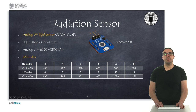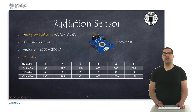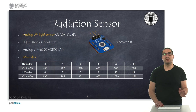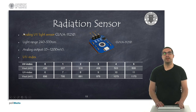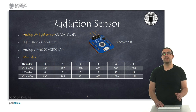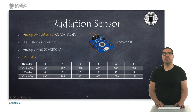We also have the radiation sensor. With this sensor we can measure ultraviolet light. This specific sensor, the GUVA-S12SD, has an analog interface and provides measurements for wavelength ranges between 240 and 360 nanometers. There is an equivalence between the measured value and the UV index, so we can use this sensor to measure the kind of radiation we are receiving in our environment.